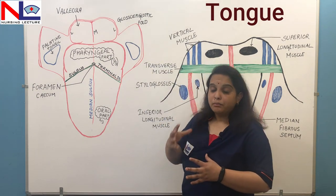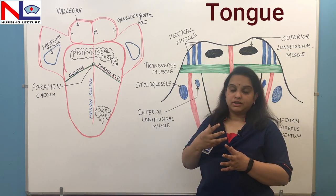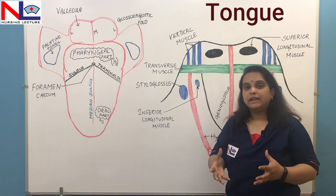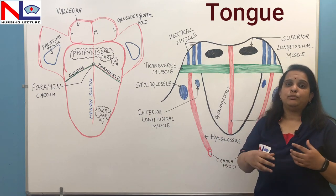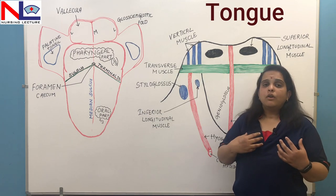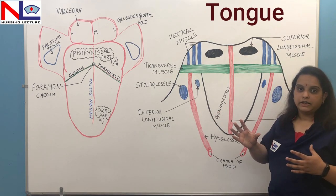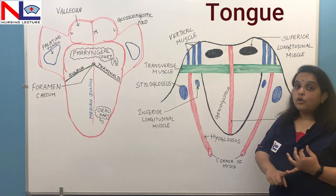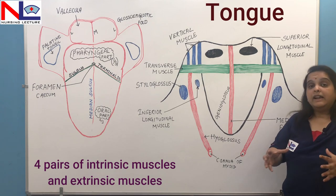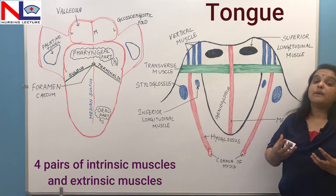The tongue is a muscular organ mainly made up of skeletal muscles. It plays various functions like speech, chewing, and deglutition — for all these it needs to retract, depress, move, and roll. The muscles play a very important role in doing all these activities. The tongue has four pairs of intrinsic and four pairs of extrinsic muscle fibers.